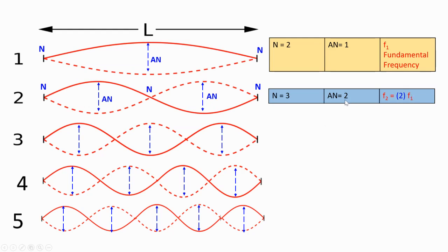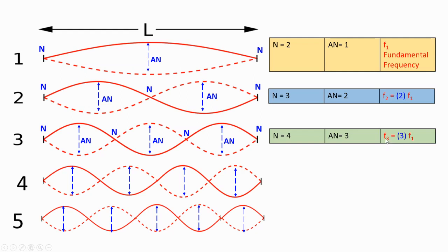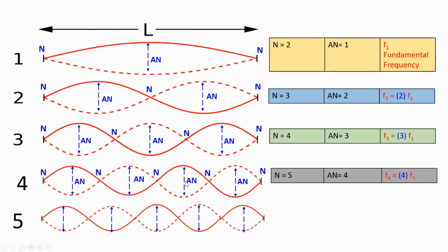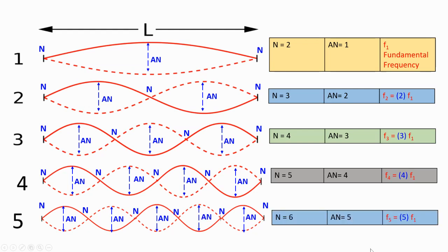The third harmonic has four nodes and three antinodes, with F3 equal to three times F1. The fourth frequency has five nodes and four antinodes, giving F4 equal to four times F1. The fifth frequency has six nodes and five antinodes, giving F5 equal to five times F1.